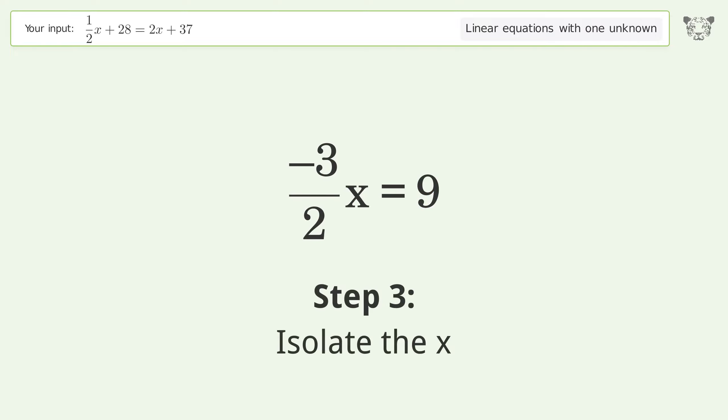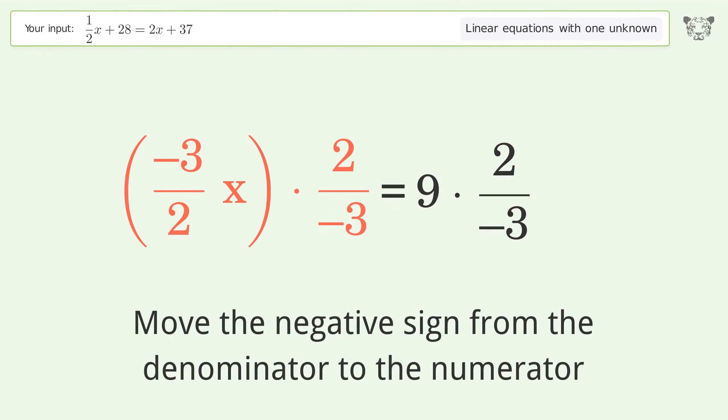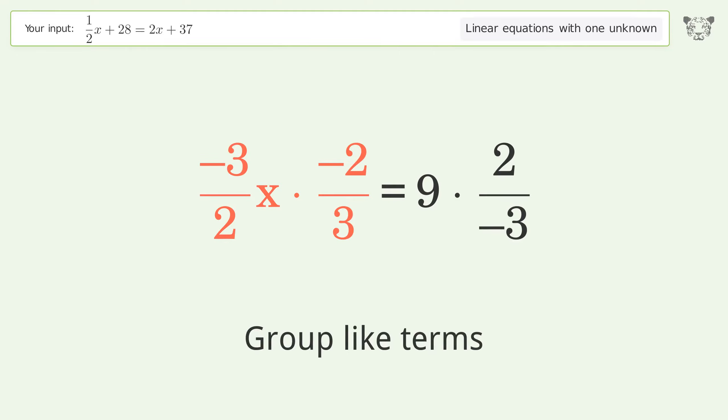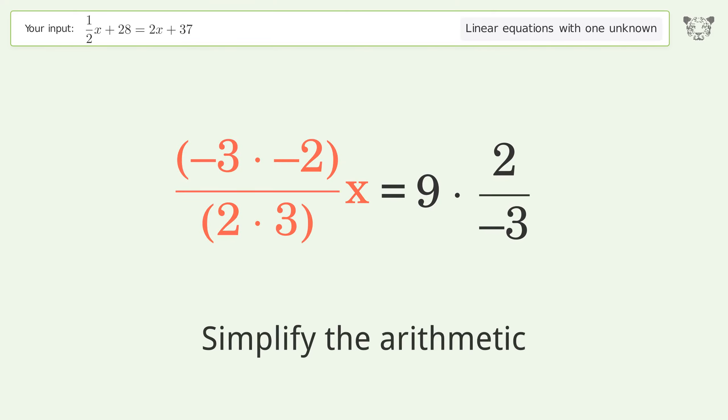Isolate the x. Multiply both sides by the inverse fraction, 2 over negative 3. Move the negative sign from the denominator to the numerator. Group like terms. Multiply the coefficients. Simplify the arithmetic.